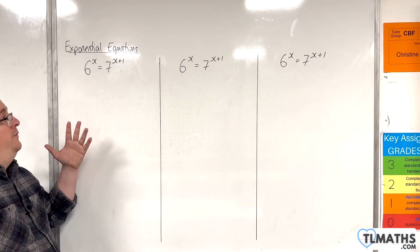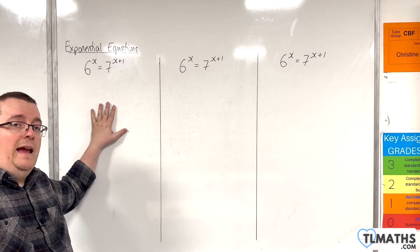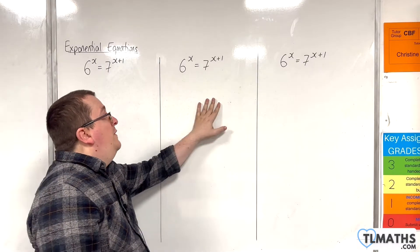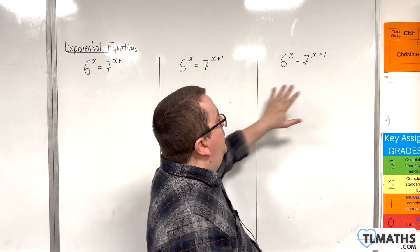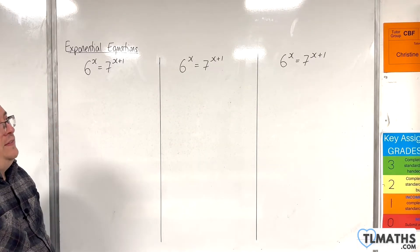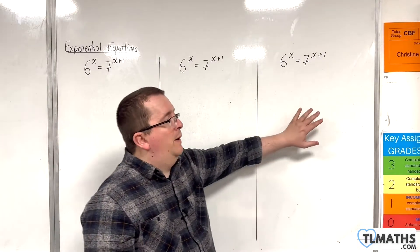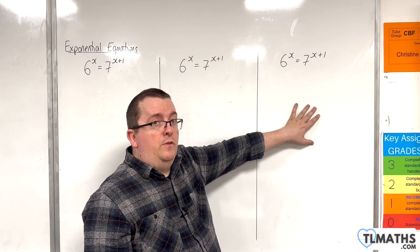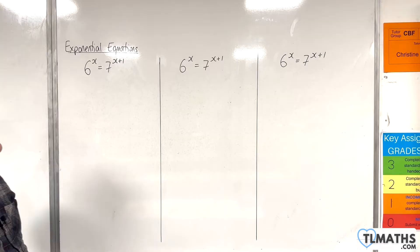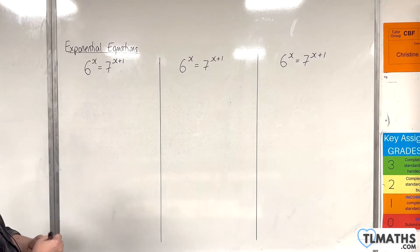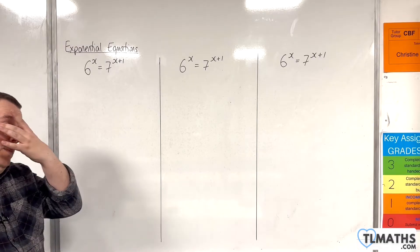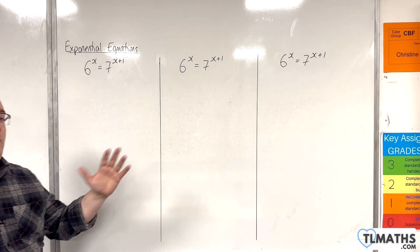I'm going to start off by logging both sides and using base 6, then use base 7, and then use the natural logarithm. We've been using the natural logarithm through the previous examples, so it's worth seeing it here too. We haven't dealt with an equation like this before, where we've got an exponential on both the left-hand side and right-hand side with different bases.